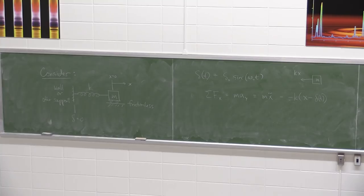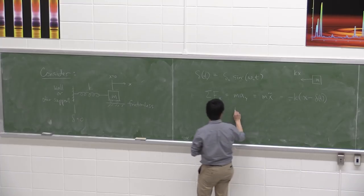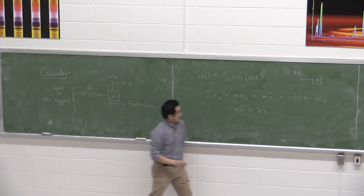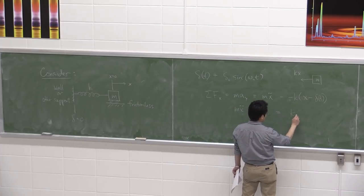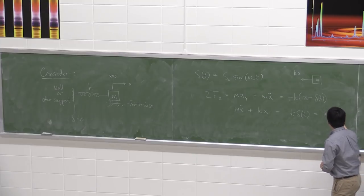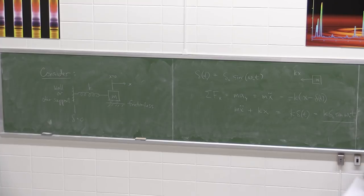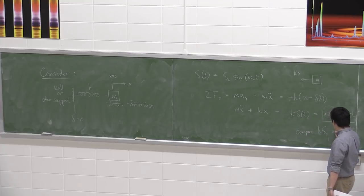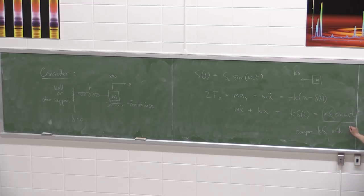That's the whole premise: I'm introducing this new extra displacement caused by the earthquake on the wall. After rearranging with mẍ and moving kx to the left-hand side, I'm left with k·δ(t), which is k·δ₀·sin(ω₀t). This looks exactly like our undamped forced vibration equation, except k·δ₀ replaces F₀. Compare k·δ₀ with the amplitude F₀ from last class.